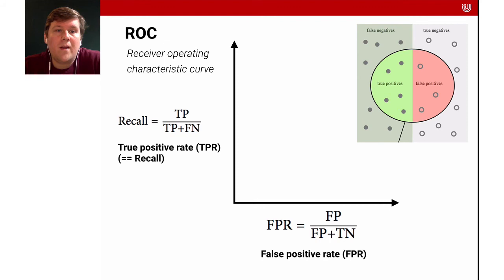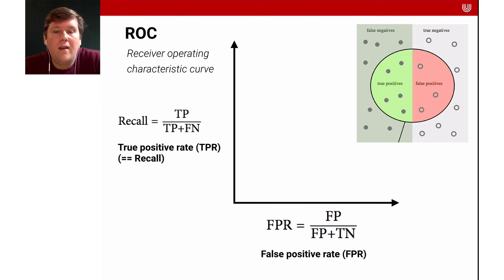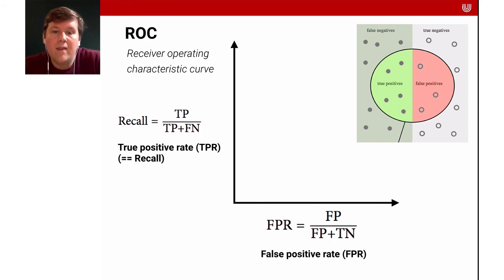Another important metric found in the literature is the receiver operating characteristic curve, the ROC curve. Here we have the recall — the true positive rate — and the FPR, the false positive rate. One is the rate of true positives we make, and the other is the rate of false positives we make.